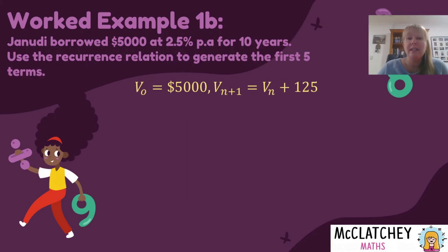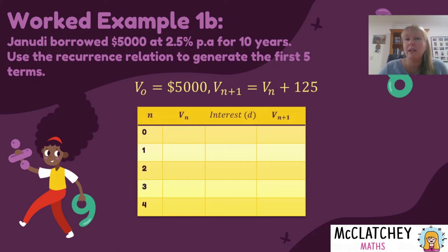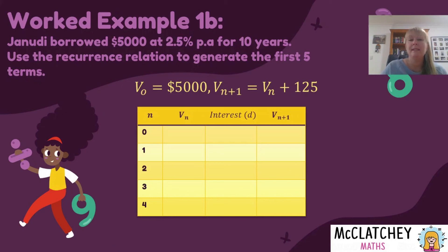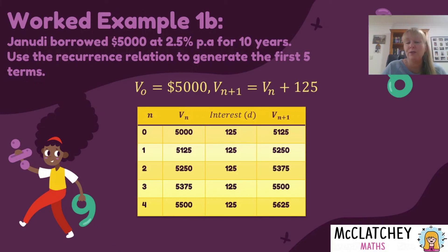Next, we're going to use that recurrence relation to develop the first five terms. The best way to present this is in a table — and sometimes you're given a table in an exam and just asked to complete it. We've got our terms on the side: N equals 0, 1, 2, 3, 4 — that's actually five terms, with the first term being zero included. The columns are: n, Vn, interest added (which is the same $125 every year), and then Vn plus one. We know V0 is $5,000. Add $125 interest and we get $5,125, which becomes V1. Then we add $125 again to get V2, and so on — the last number in the table becomes the first number in the next row.